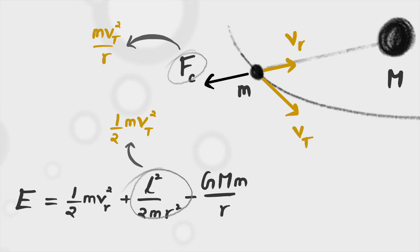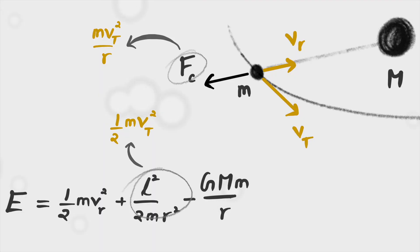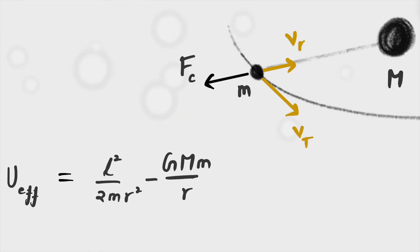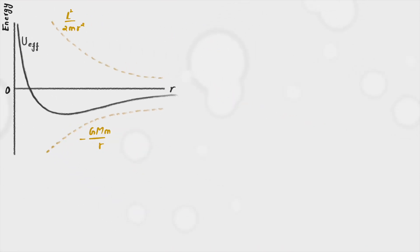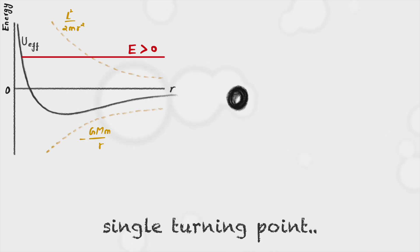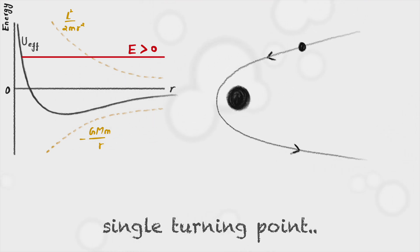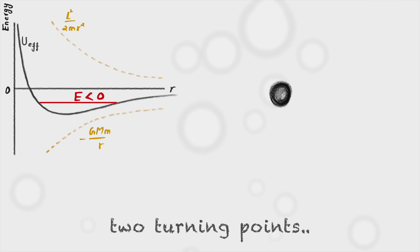Since the middle term in the energy equation represents a centrifugal force, it can be considered a form of potential energy, similar to how gravitational potential energy represents a gravitational force. Together, these two are known as the effective potential energy. If we plot energy against the radial distance, we can gain an overview of what might happen when the two masses interact. If the total energy is greater than zero, the smaller mass will follow a parabolic trajectory. If it is less than zero, the smaller mass will move in an elliptical path. In either case, some form of rotation is involved.